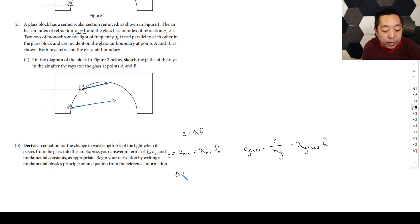That's how fast it's going to go, and that's going to equal lambda in the glass times F0. Now if we want the change in the wavelength, we're just going to do the wavelength in the air minus the wavelength in the glass. And so that's going to be C over F0 minus C over NG F0. You can factor out if you want to. You can factor out C over F0 and it makes it look like 1 minus 1 over NG.